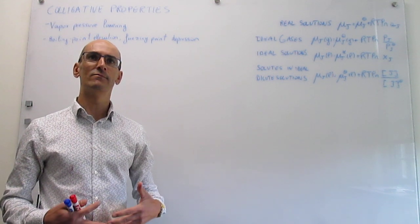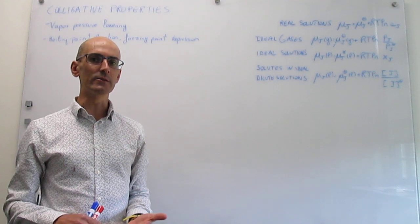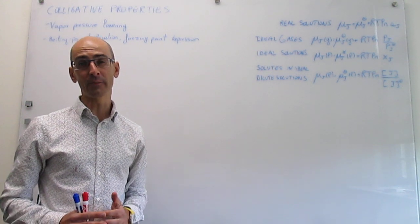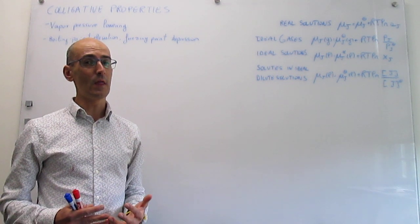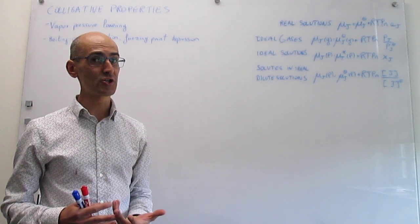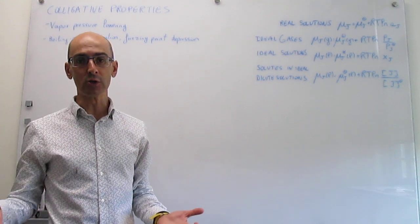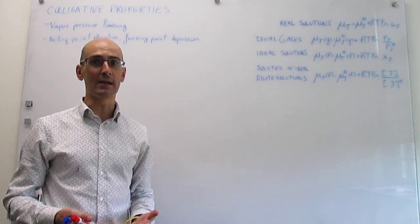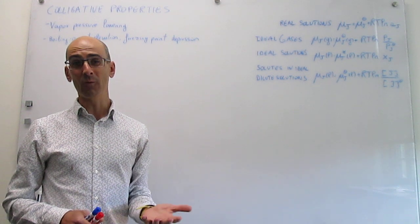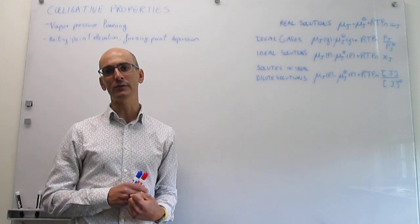Colligative properties are a set of phenomena in which you have a solvent — a majority component — and you're going to be adding a solute, and what you ask is how does the addition of the solute change the properties of the solvent. The name colligative properties really means that it doesn't matter the type of solute that you add. For these properties, the only thing that matters is how much of that solute you add. So if you have water as a solvent and you're adding either glucose or ethanol — two very different substances — for a colligative property it will not depend on whether you're adding the ethanol or glucose, only on the concentration.